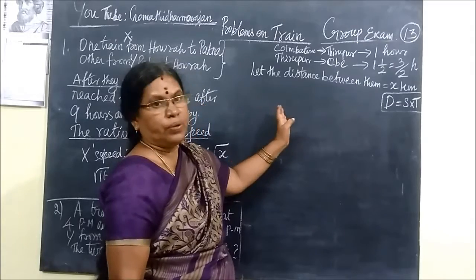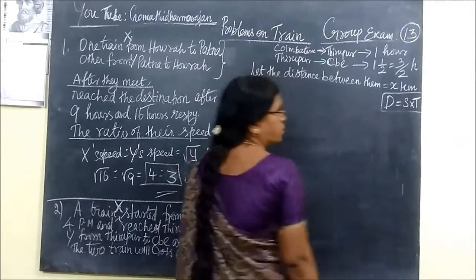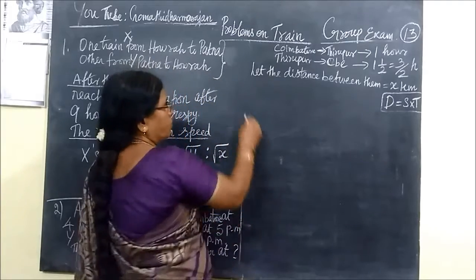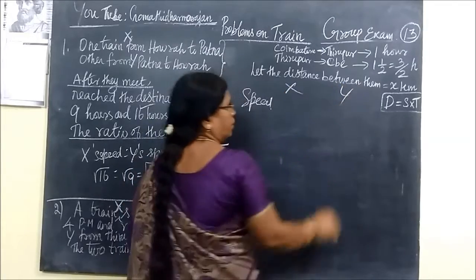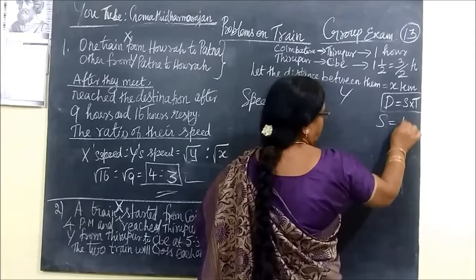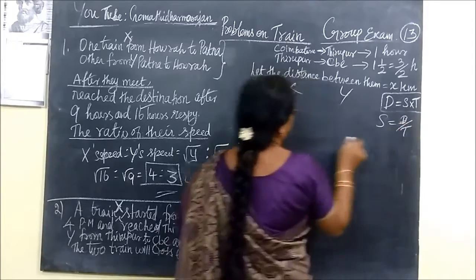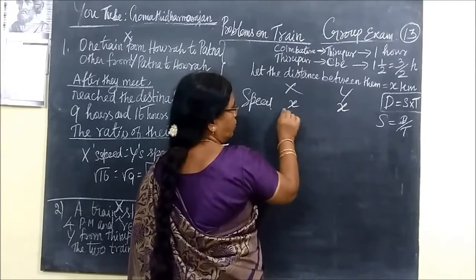Let the distance between them equal to X km. We know distance equal to speed into time. So first of all we find speed. Here the train is X train Y. Speed equal to distance by time. So the distance is X km. Here also the same X km.